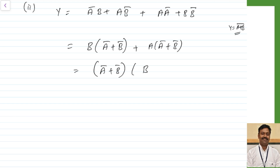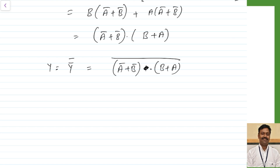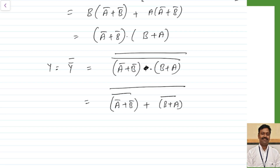So A bar plus B bar is common, and this can be written as A bar plus B bar into B plus A. Now I take Y double bar: this becomes A plus B bar plus B plus A bar dot product. Taking the double bar and applying De Morgan's law gives A bar plus B bar whole bar, plus B plus A whole bar, and then an overall outer bar. So all terms are in addition form, which means we can implement this easily using NOR gates.